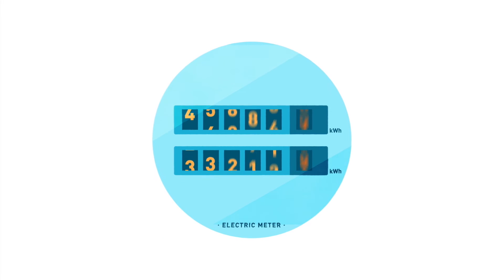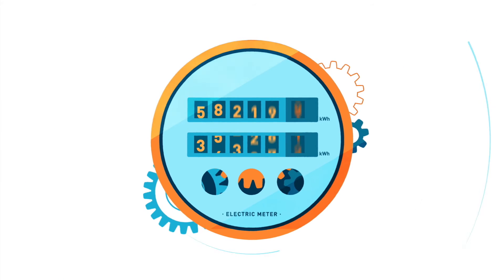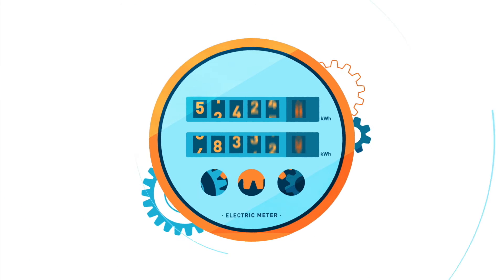Many motors run at a constant speed, and they don't have to. This wastes energy and wears out your equipment faster.